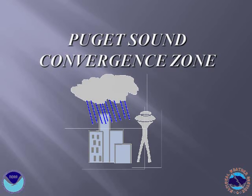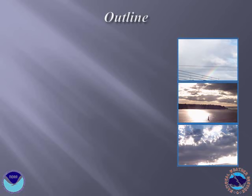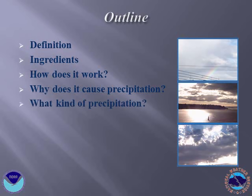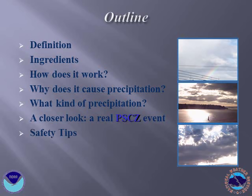Hello and welcome to the National Weather Service Seattle Washington office presentation on the Puget Sound Convergence Zone. The Convergence Zone is a local phenomenon that allows the Puget Sound area to experience prolonged periods of rainfall, thunderstorms, and even snow. To outline the contents of this lesson, first we'll give a definition of the Convergence Zone, then we'll talk about the ingredients required, how it works, why it causes precipitation, and the kinds of precipitation that occur. Then we'll take a closer look at an actual Puget Sound Convergence Zone event. Finally, we'll give you some safety tips and conclude our lesson with a summary.